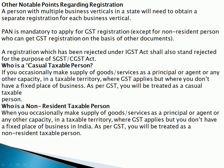A casual taxable person is someone who occasionally makes supplies of goods or services as a principal, agent, or in any other capacity in a taxable territory where GST applies, but does not have a fixed base of business in that area. If you are making a supply from a particular area and do not have any fixed establishment or fixed base of business there, and you are occasionally — not continuously — making supply from that area, then you will be treated as a casual taxable person.